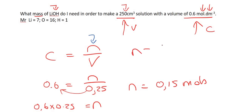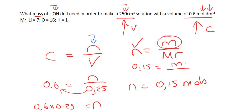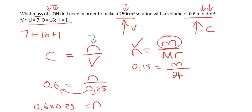Now we use n = m/Mr, where n = 0.15 and the mass is unknown. The Mr of lithium hydroxide: lithium is 7, one oxygen, one hydrogen — that gives a molar mass of 24. We rearrange to get mass = 0.15 × 24, so the mass equals 3.6 grams.